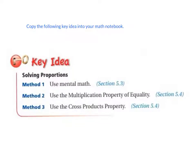Copy the following key idea into your math notebook. Today's key idea is solving proportions. Method 1, use mental math. Method 2, use the multiplication property of equality. And Method 3, use the cross products property. We have covered Method 1 using mental math in Section 5.3. Today we'll cover Methods 2 and 3 using the multiplication property of equality and using the cross products property.